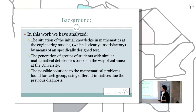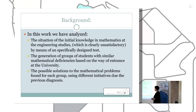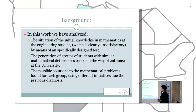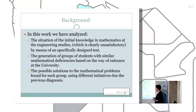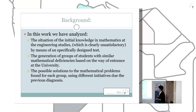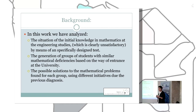In this work we have analyzed the situation of the initial knowledge in mathematics at the engineering studies. This level is clearly unsatisfactory. We have done this investigation using a specifically designed test, which has allowed us to identify groups of students with similar mathematical deficiencies. These mathematical deficiencies are related to the way of entrance at university, and the possible solution should be tailored for each group, since each group has a different problematic and requires a different kind of solution.